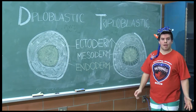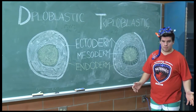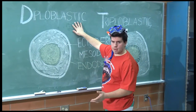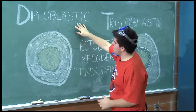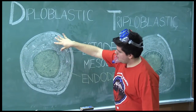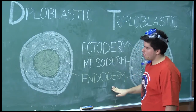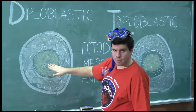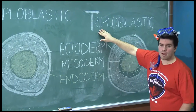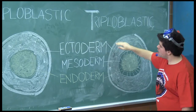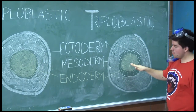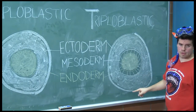Next, we're going to learn about the body plans of these simple animals. There are two types of body plans. The first is diploblastic — diplo meaning two. The first layer is your ectoderm, which is your outer layer. And the second is the endoderm, which is the inner layer. The second body plan is triploblastic — tri meaning three. Again, your outer layer is your ectoderm, your inner layer is the endoderm, and the striped part is your mesoderm.